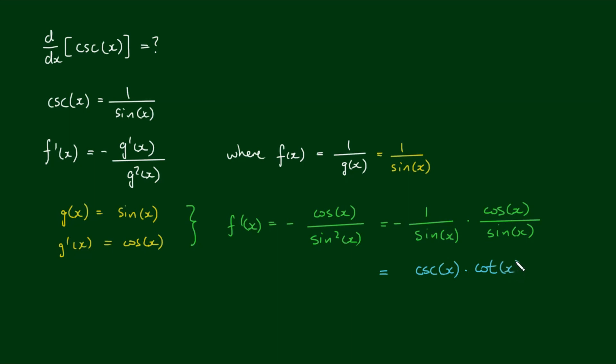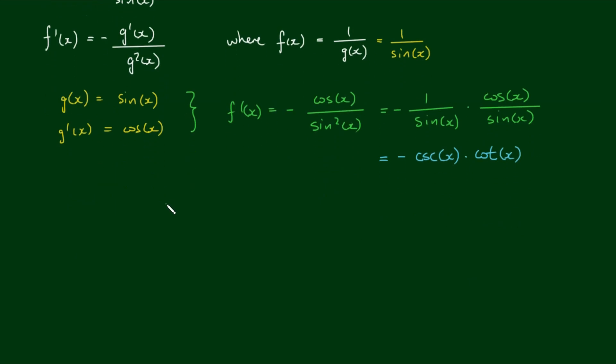So it's the cotangent of x and we have the negative out in front. So therefore, the derivative of the cosecant function, the derivative of the cosecant of x is equal to negative of the cosecant of x by the cotangent of x.